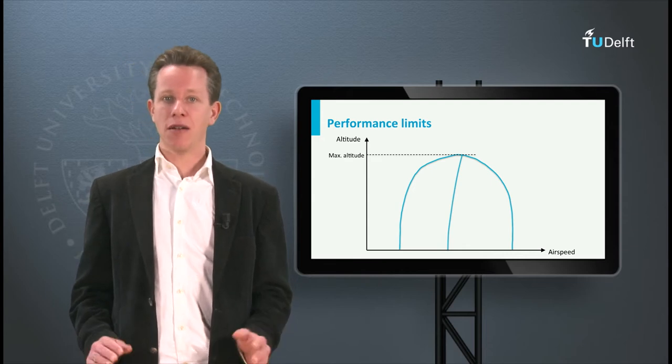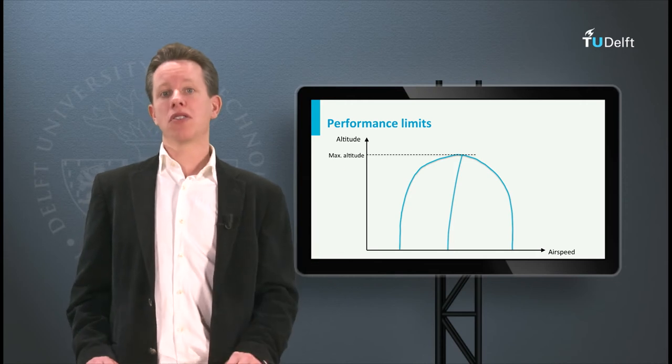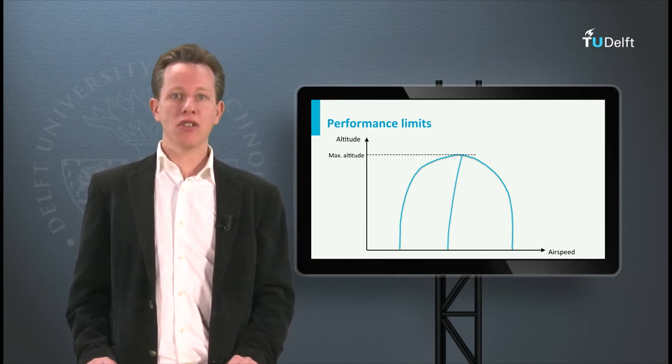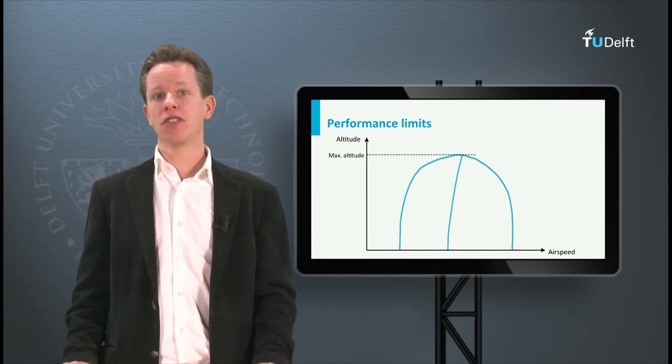Today I will make an example derivation which shows how to determine this maximum altitude based on some basic aircraft data. Based on these calculations we will also be able to reason what the optimum shape is of an aircraft designed for high altitude flight.